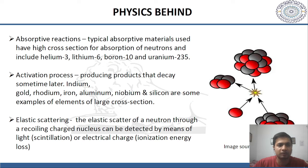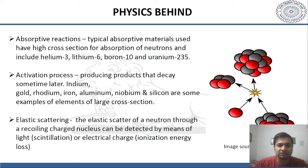The interaction of neutrons with matter may involve absorptive reactions. Typical absorptive materials used have a high cross-section for absorption of neutrons and include helium-3, lithium-6, and boron-10. It may involve an activation process, which produces products that decay later. Indium, gold, rhodium, iron, aluminium, niobium, and silicon are examples of elements with a large cross-section. The elastic scatter of a neutron through a recoiling charged nucleus can be detected by means of scintillation or ionization energy loss.